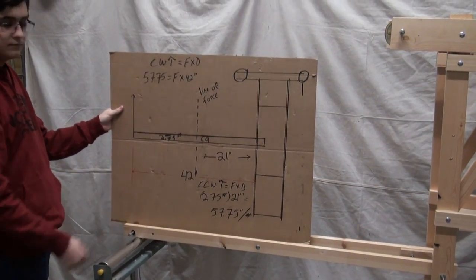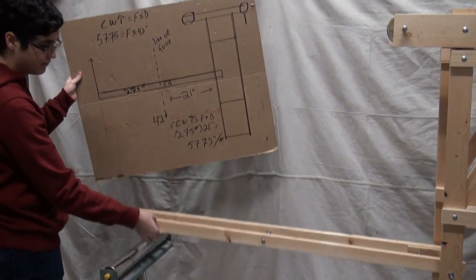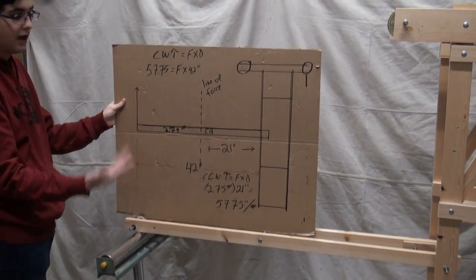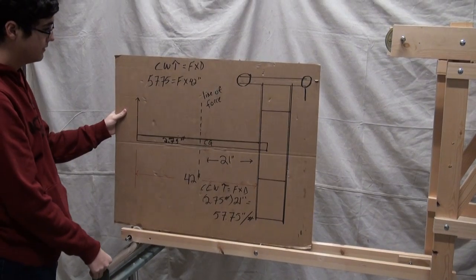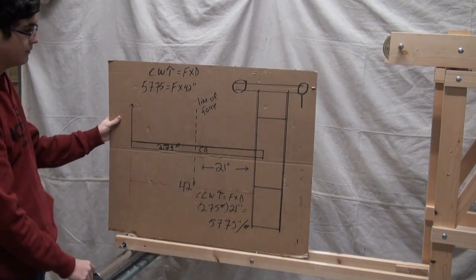So the torque pulling upwards in the clockwise direction is 57.75. It's stationary, they have to be equal. Torque is force times distance. We want to find out the force. How do we get the distance?